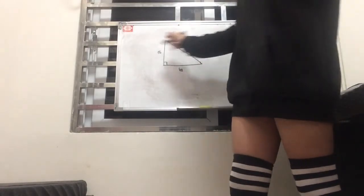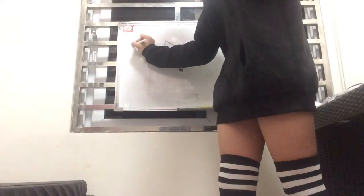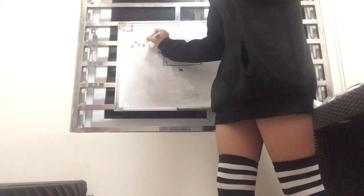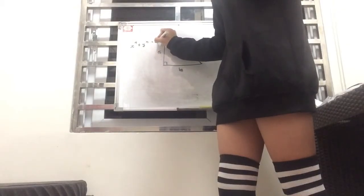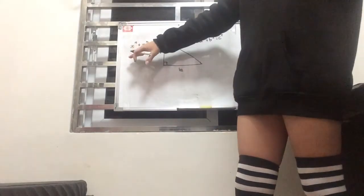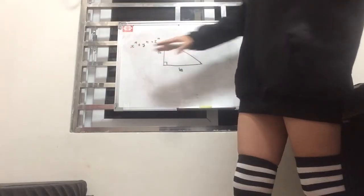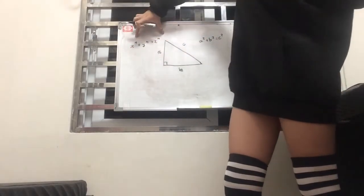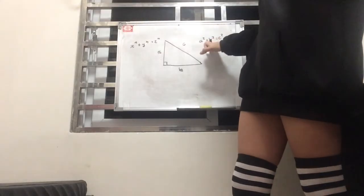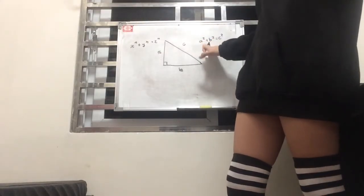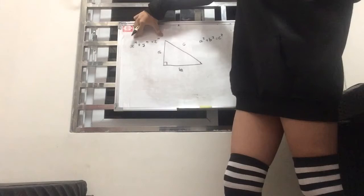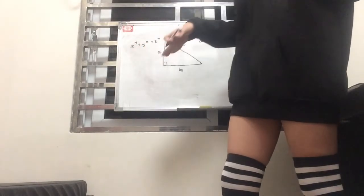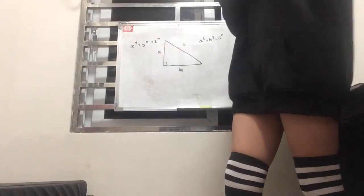So basically what the Pythagorean theorem states is a² + b² = c². Now this theorem was made by Pythagoras himself, the Greek mathematician, and this is a way for us to calculate or to find out the length of one side given two other sides.